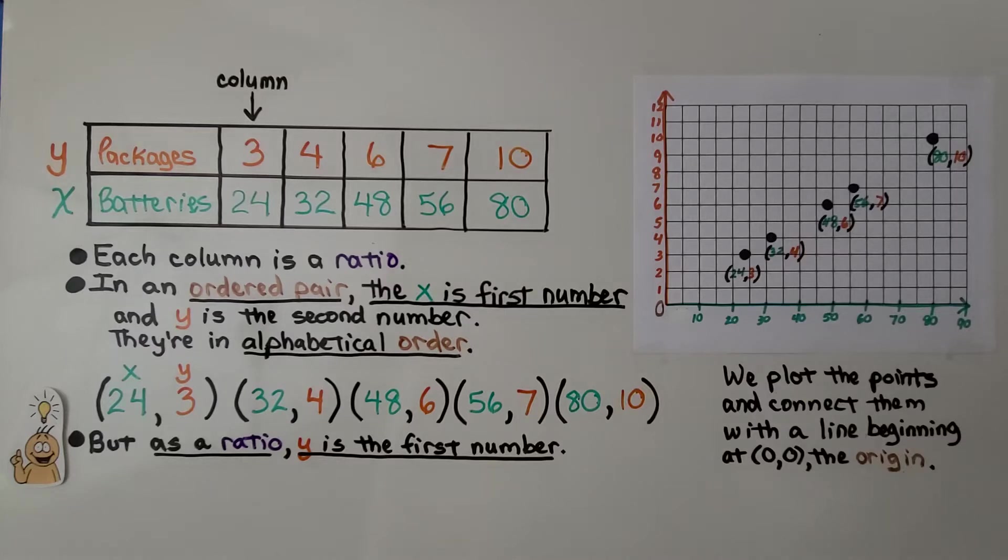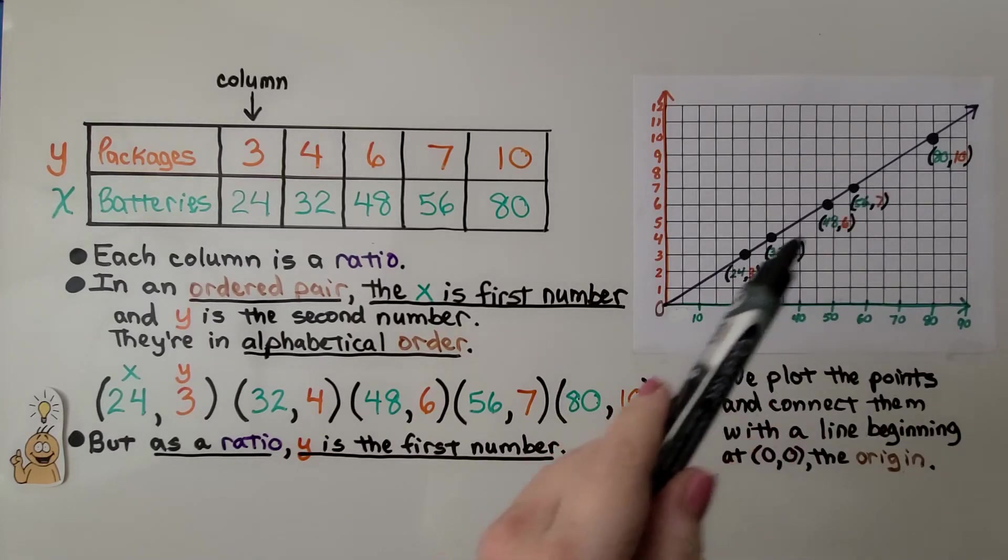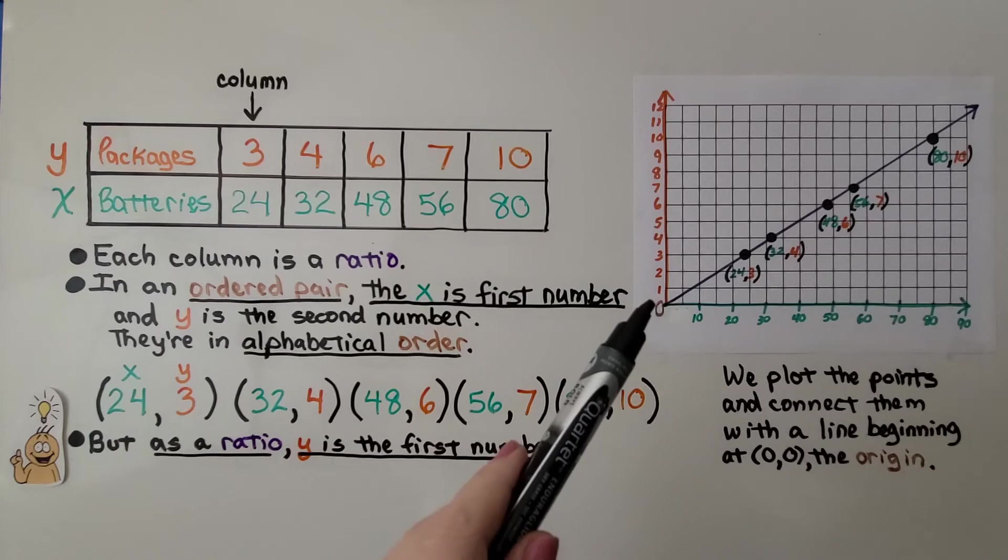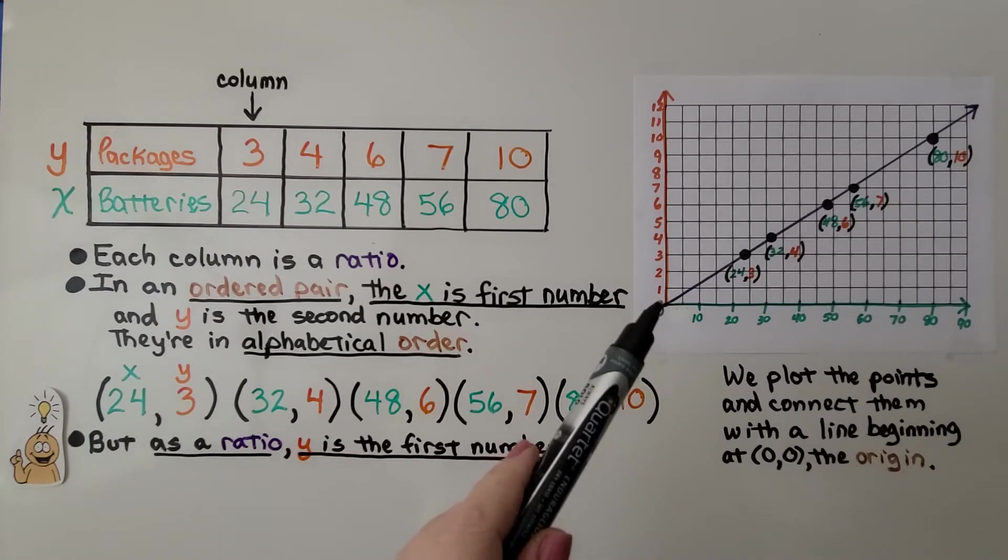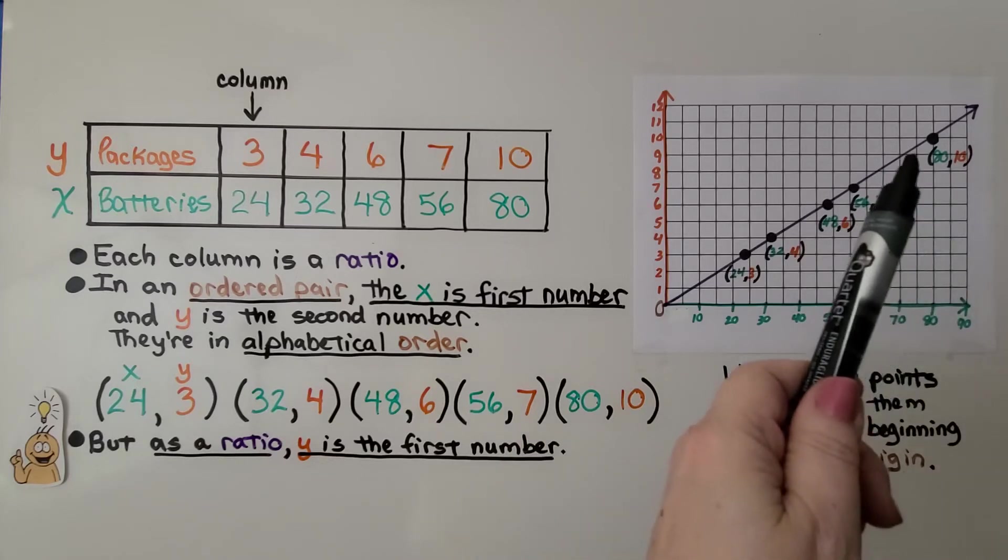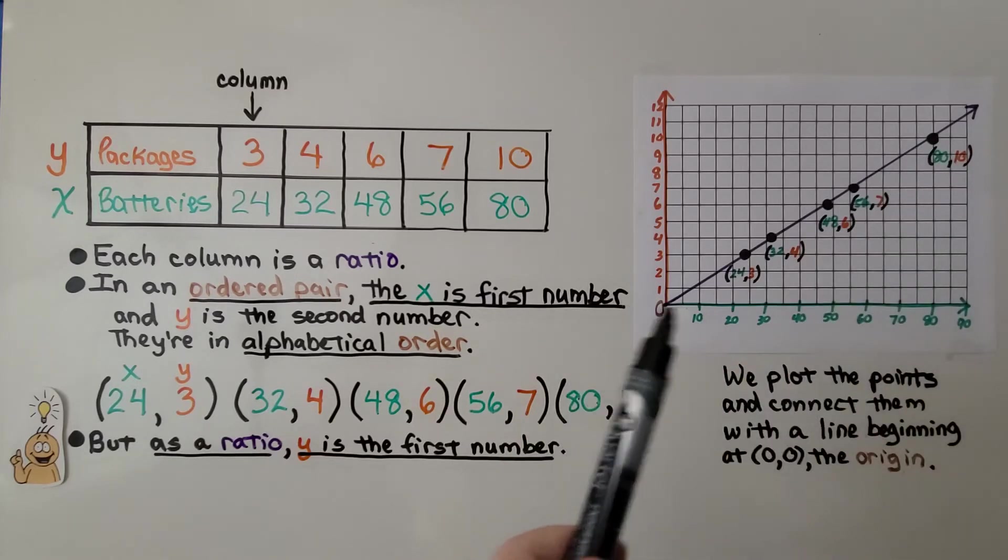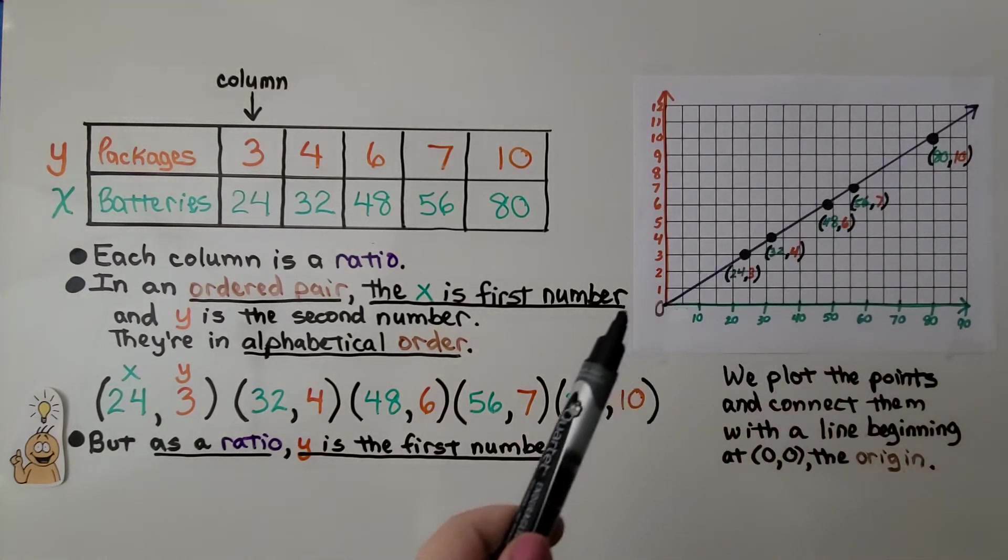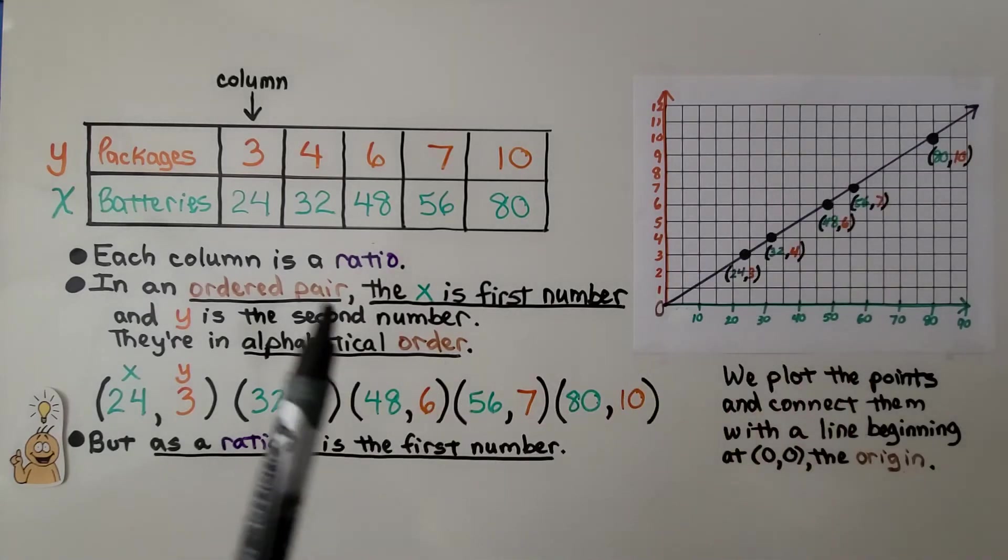We plot the points, and we connect them with a line beginning at 0,0, the origin. And the easiest way to do this, if they're all equivalent, we start at 0 with our pen and a straight edge like a ruler, and we just go to the 80, and we connect 0 to 80. And if they all connect, we know that all of our values are equivalent as equivalent ratios.